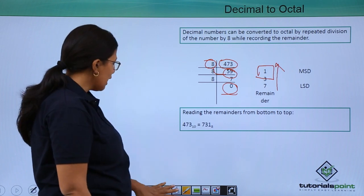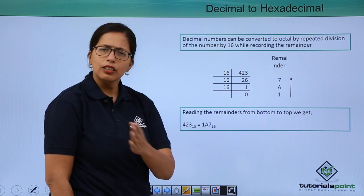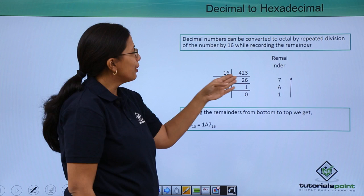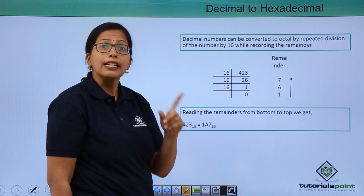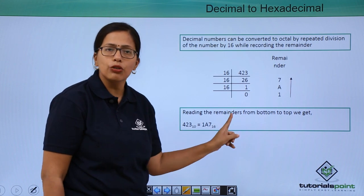Now, let's see how the decimal number can be converted to hexadecimal. The process remains the same. I will take a number and keep dividing by 16 here till I get the quotient as 0.